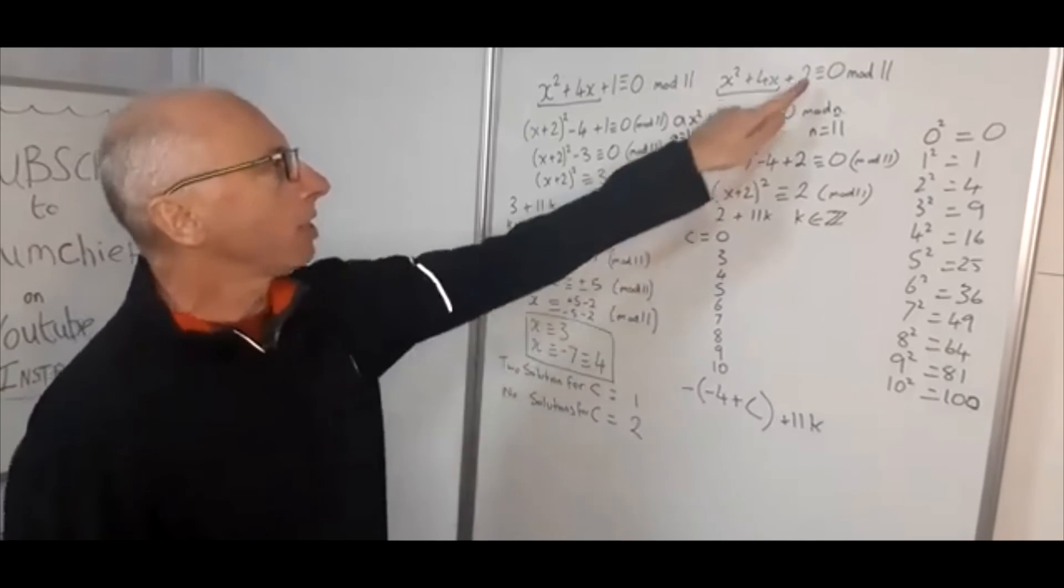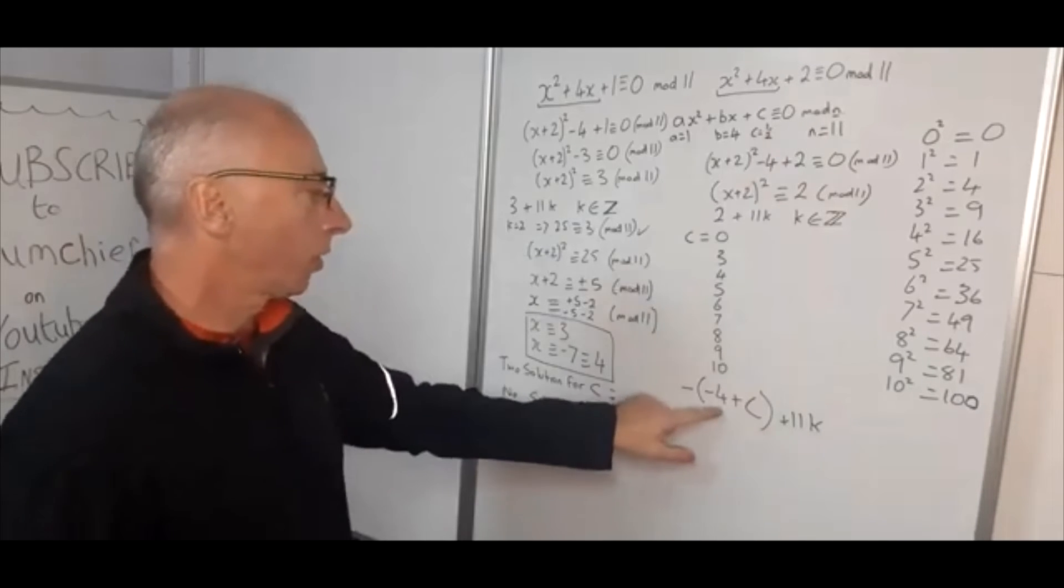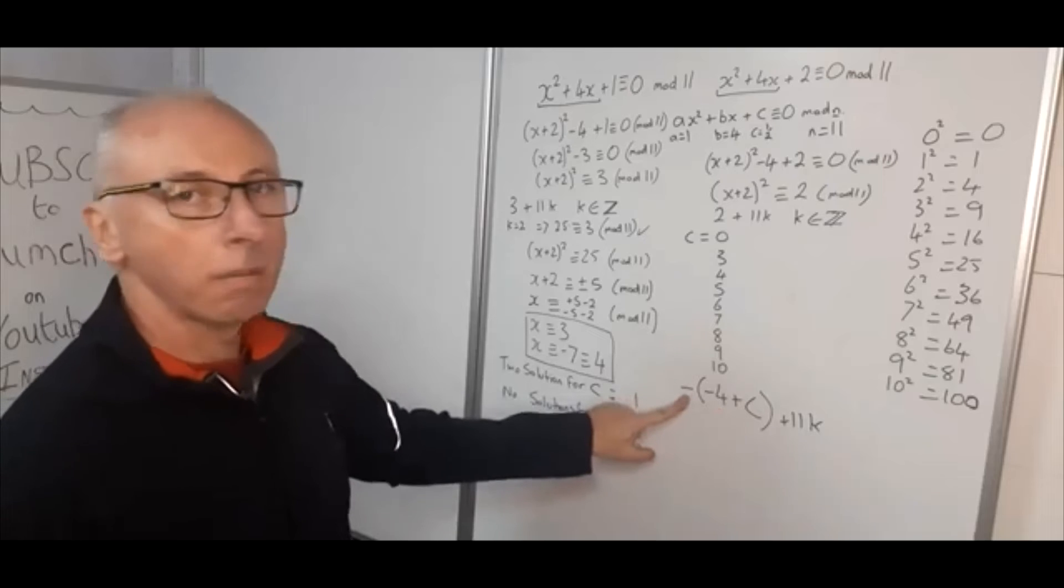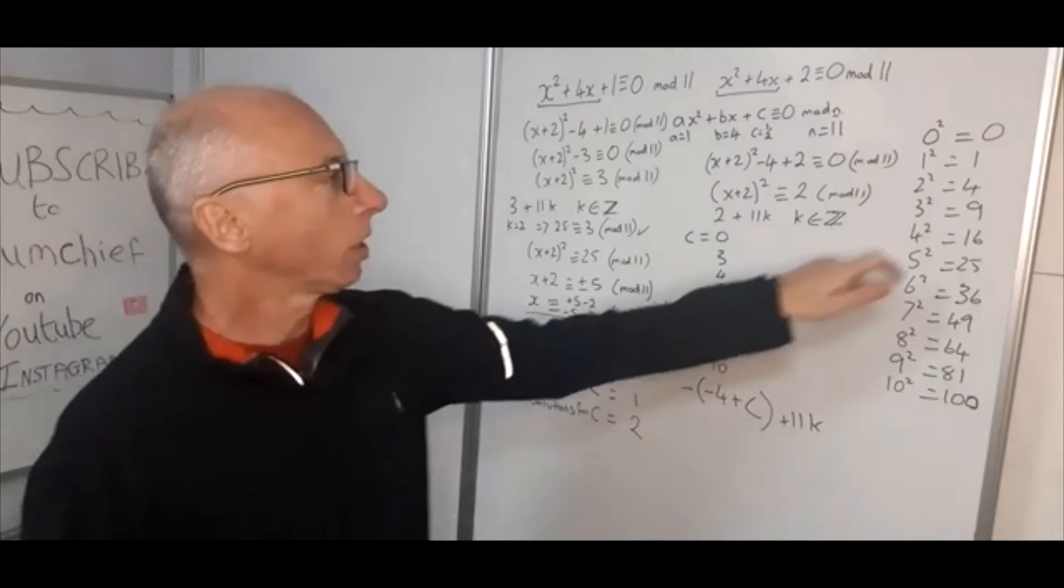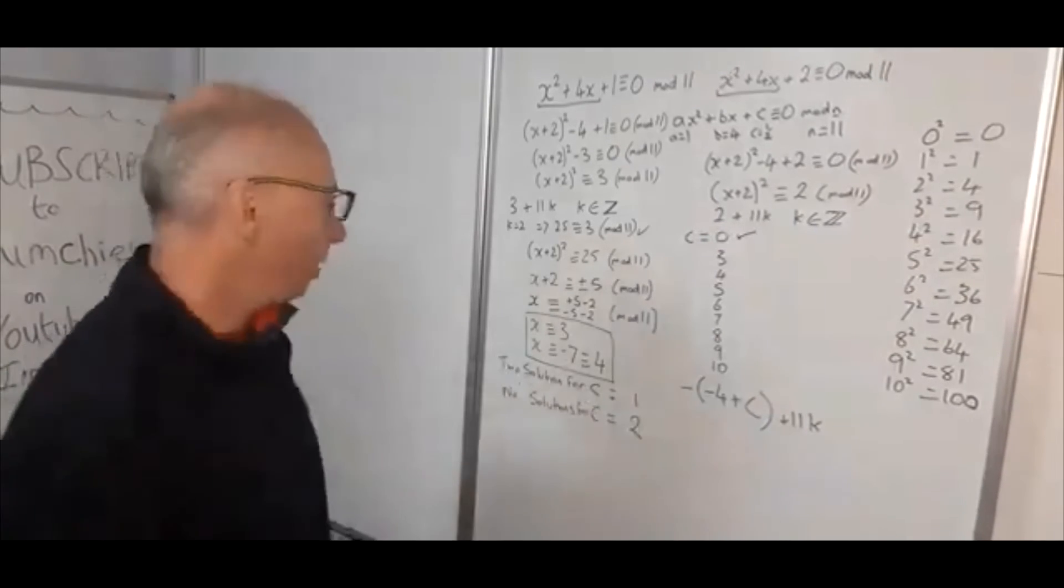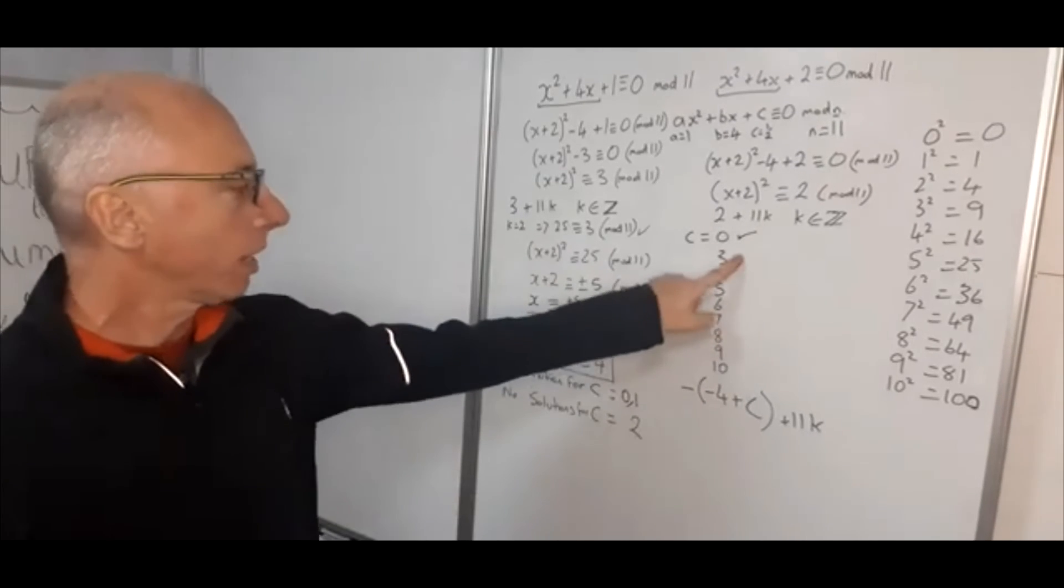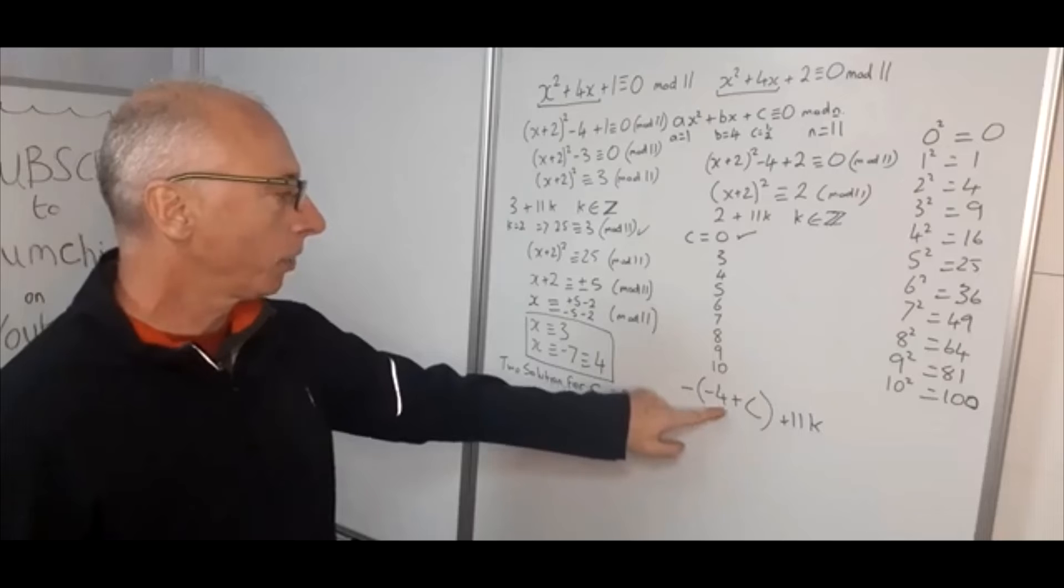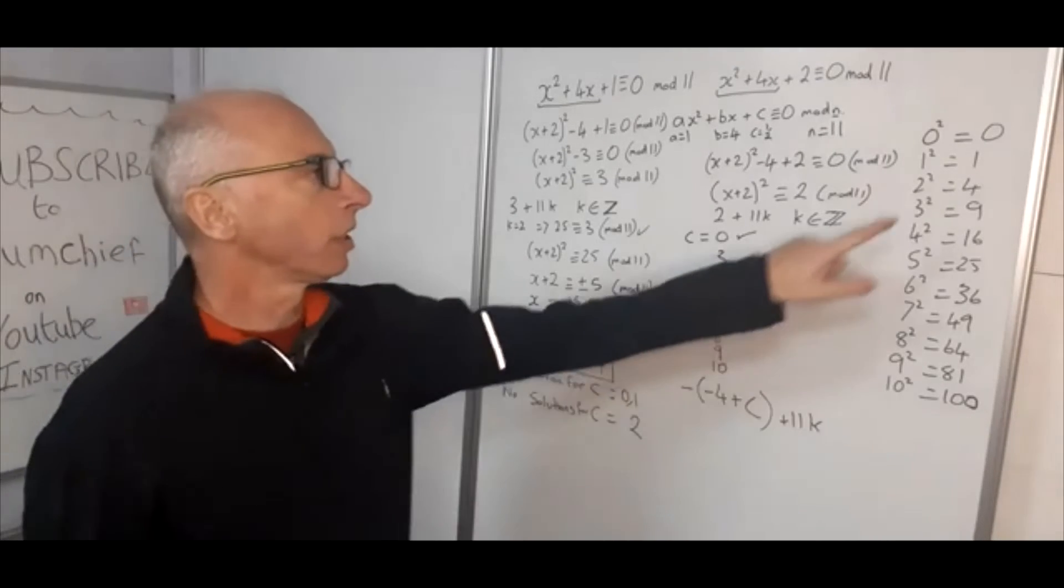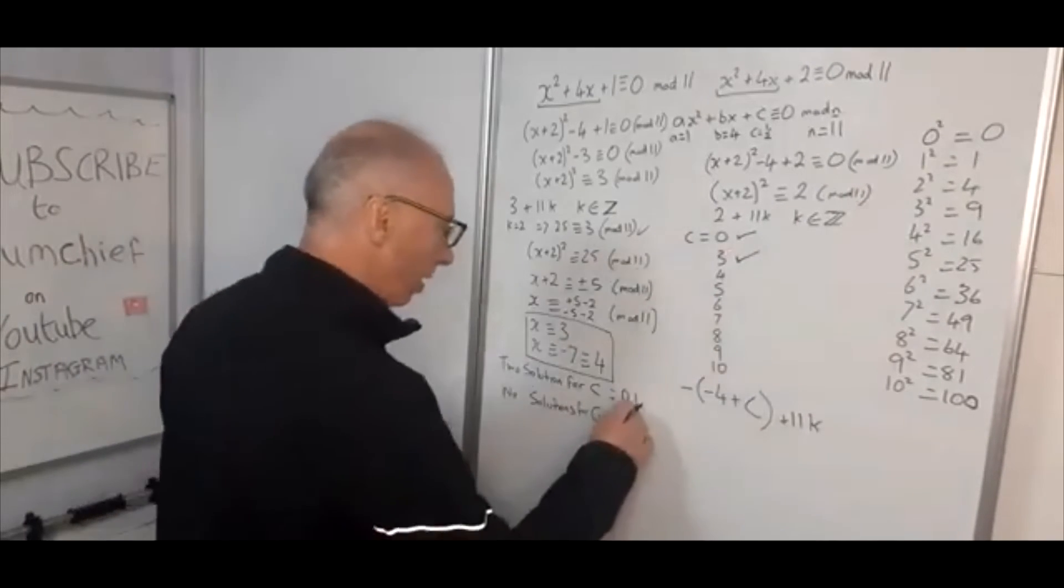So let's start off when c is 0, so for example if this is x squared plus 4x plus 0, so minus 4 plus 0, minus 4 plus 0 is minus 4, minus of minus 4 is also positive 4, straight away 4 is in here. So c equals 0, that has a solution. So let's just write that in this table here. Now straight on to 3, minus 4 plus 3 is minus 1, minus of minus 1 is positive 1, 1 is in there. So 3 is good to go.